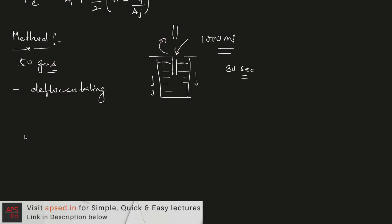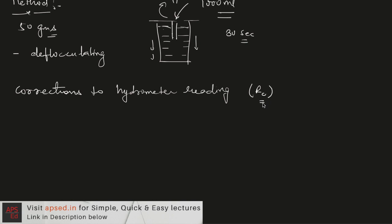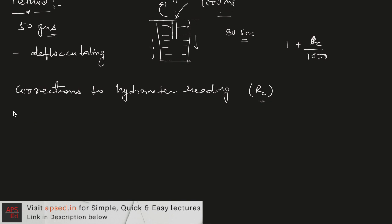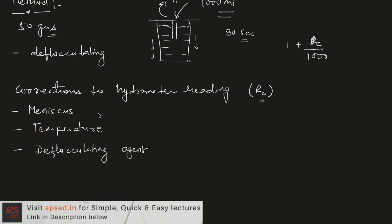There are corrections to be applied to the hydrometer reading RC before using it in 1 + RC/1000. The three corrections are: first, the meniscus correction (always positive); second, the temperature correction (positive or negative); and third, the deflocculating agent correction (always negative).